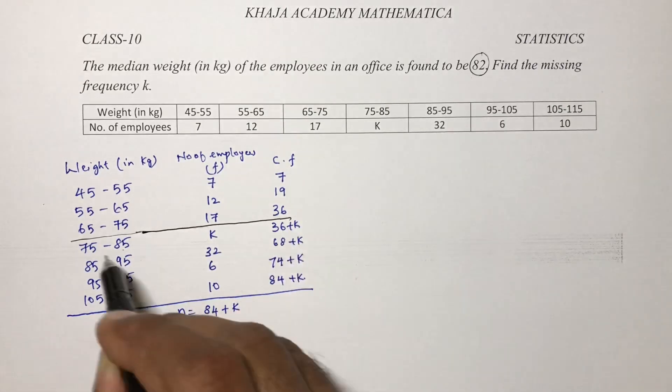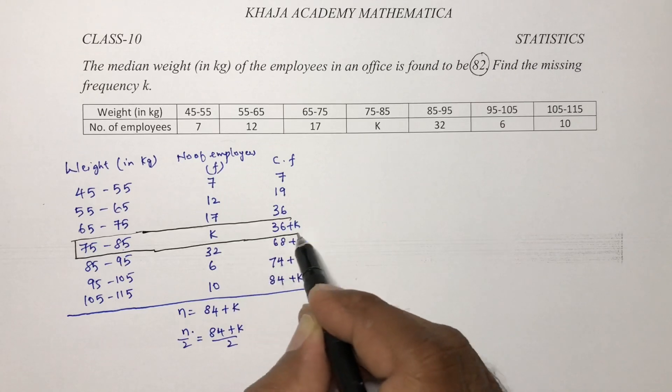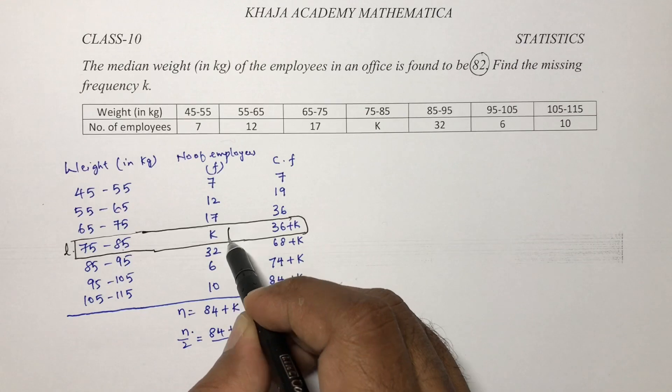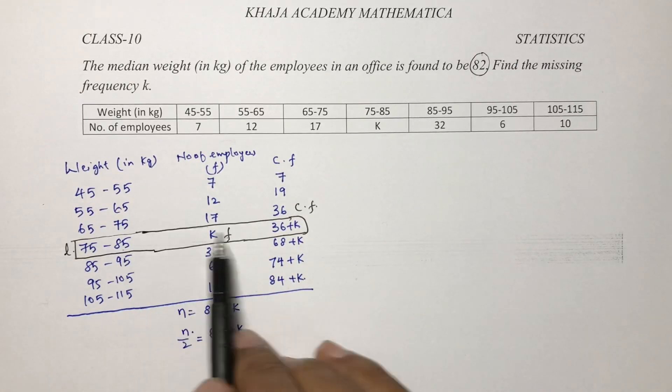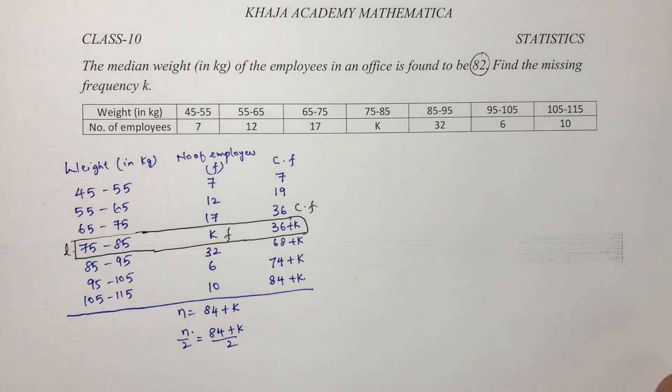So this is the median class, 75 to 85, because the median is 82. So this is lower boundary lower limit. f is the frequency of the median class, cf is frequency preceding the median class.